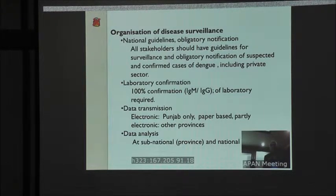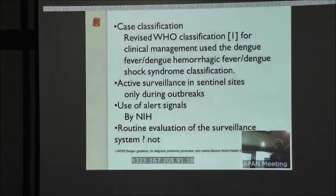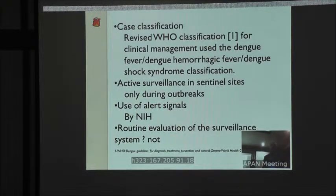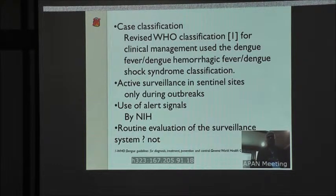A paper-based and partly electronic system is available in all other provinces. Data analysis is conducted at sub-national — provincial — and national level. Case classification is observed as per WHO classification. Active surveillance is conducted in sentinel sites only during outbreaks. Alert signals are provided by the National Institute of Health. However, routine evaluation of the surveillance system is not available — that is required, and is also a challenge to assess the efficacy of the system.